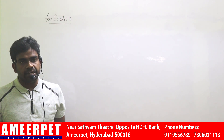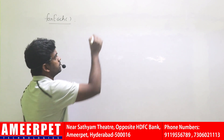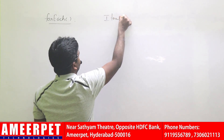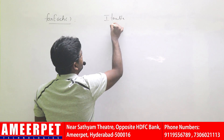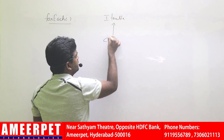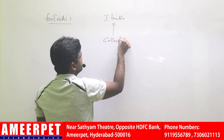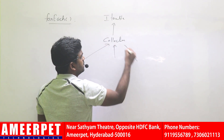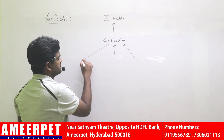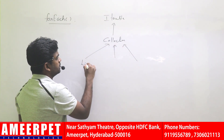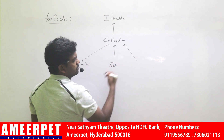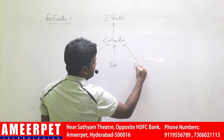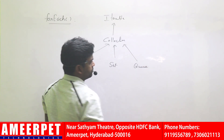For all collection interfaces, we know that the top interface is the Iterable interface. Iterable interface is extended by the Collection interface, and the Collection interface is extended by so many other interfaces — List, Set, Queue, and all other interfaces.